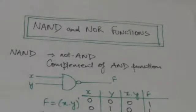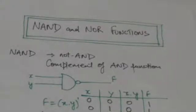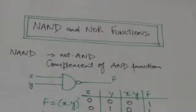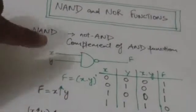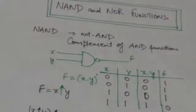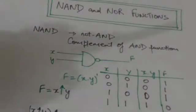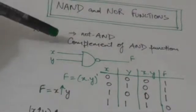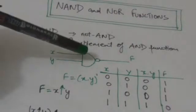Hello friends, welcome back to tutorials. In this tutorial we will learn about NAND and NOR functions. NAND is the complement of AND function and it is an abbreviation of NOT AND. This is the gate which implements the NAND function — it is also called a NAND gate. Here X and Y are the inputs of this gate.